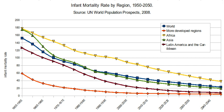The U.S. National Institute of Child Health and Human Development has made great strides in lowering U.S. infant mortality rates. Since the institute was created, the U.S. infant mortality rate has dropped 70%, in part due to their research.